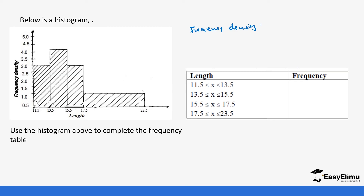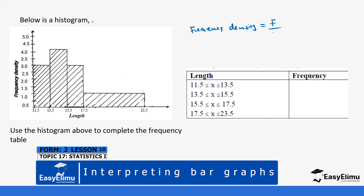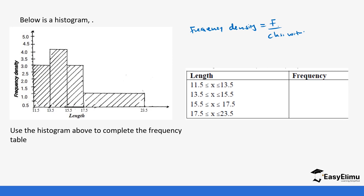Frequency is equal to the frequency density times the class width. So let's get the class width first before we start using the formula. We have 13.5 minus 11.5, which gives us 2. So the class width for the first class interval is 2.